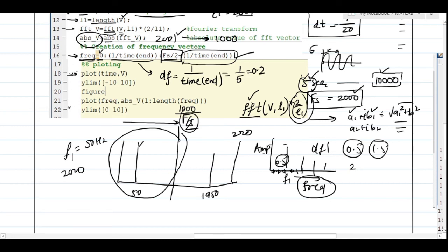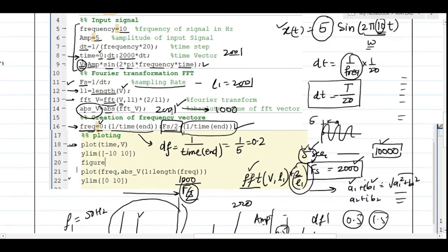Lines 18 to 22 are the plot commands. Line 18 plots the actual time-domain signal vector. Line 19 sets the y-axis limits — for example, ylim([-10, 10]) restricts the y-axis from -10 to +10. Line 21 plots the frequency vector against the fft output. The length of the fft vector is 2001, but I only plot from index 1 to the length of the frequency vector (the first half), so both vectors match in length and the plot is correct.